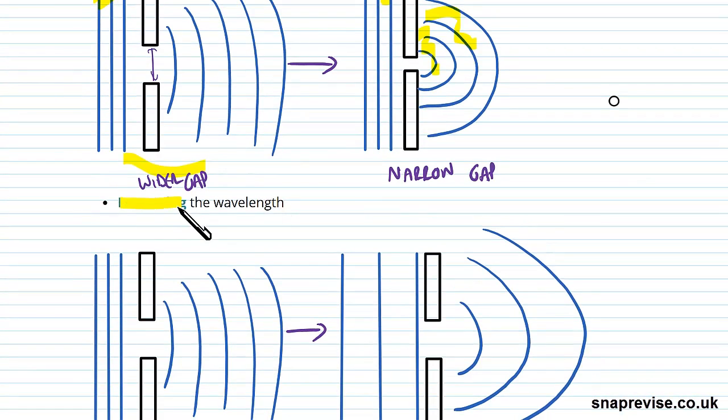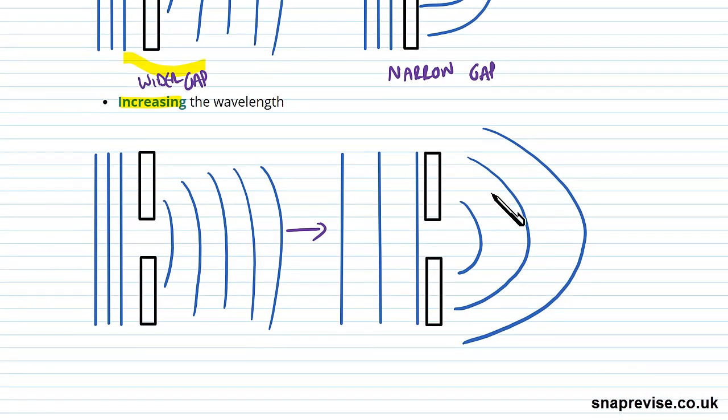We can also increase the wavelength. What does that mean here? Well, using this as a, so having below as a ripple tank. If these are our wavefronts, then the distance between the wavefronts is going to be lambda, the wavelength.